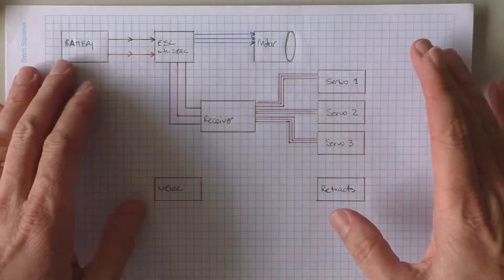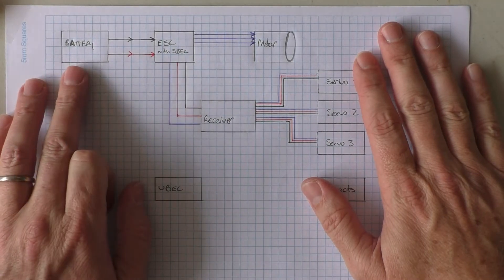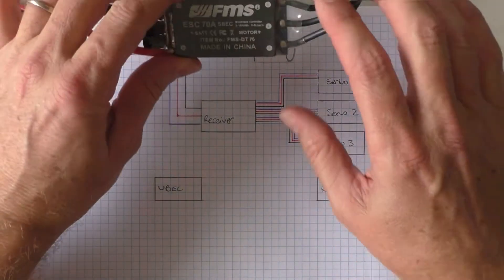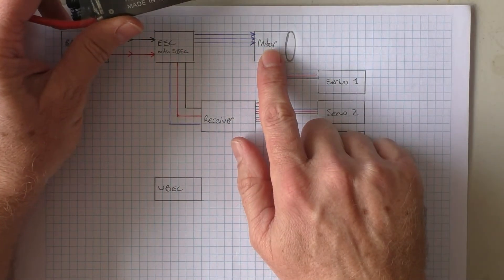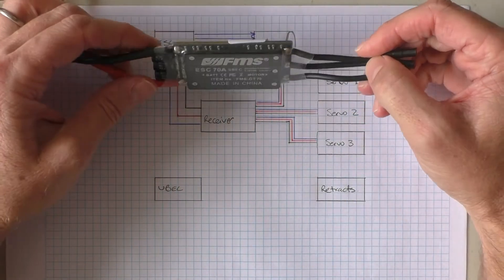So a quick summary. This is for an RC plane. You have your battery that provides power to your ESC. The ESC then provides power to the motor. That's all fine.